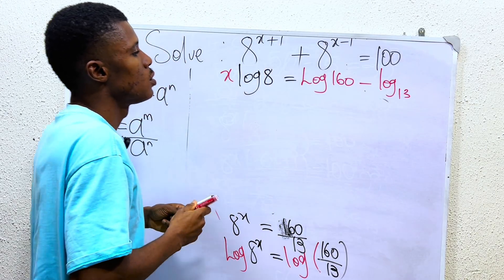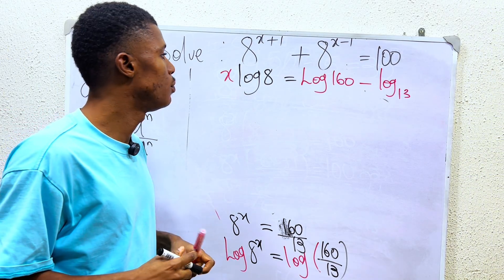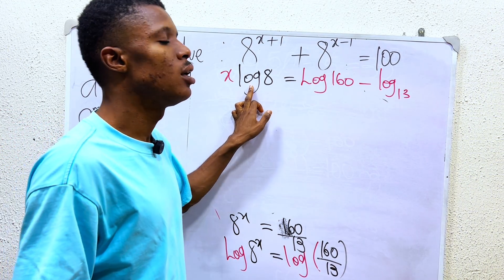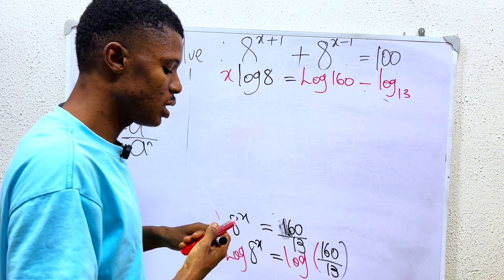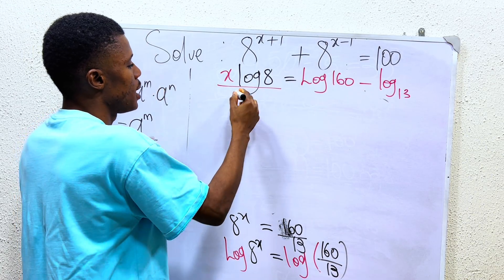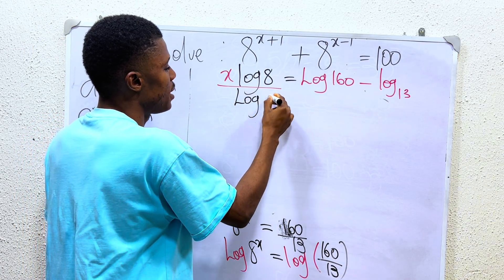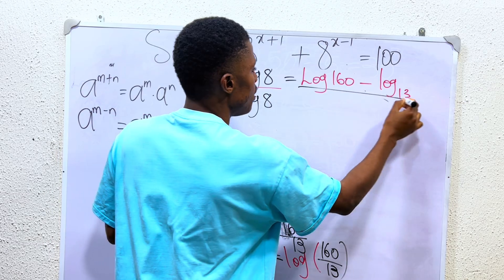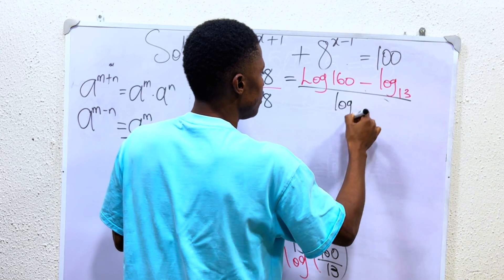So for us to get the value of x, we just have to divide both sides by log 8. We divide here by log 8, and we also have to divide here by log 8.